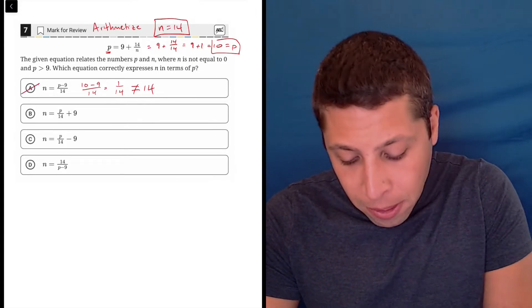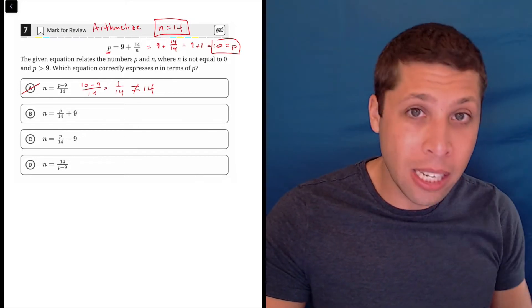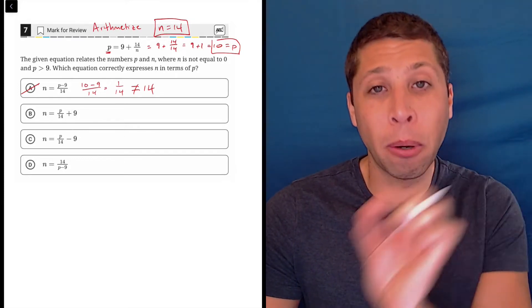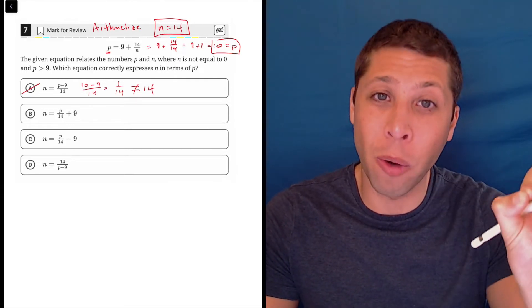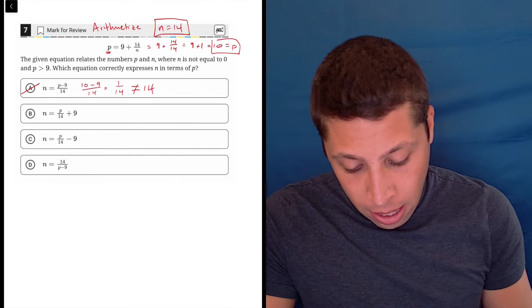So that tells me that A is wrong because the number 10 should have given me the number 14 because that point is supposed to exist on both equations, the original one that they gave us and the new one that we're dealing with in the choices.